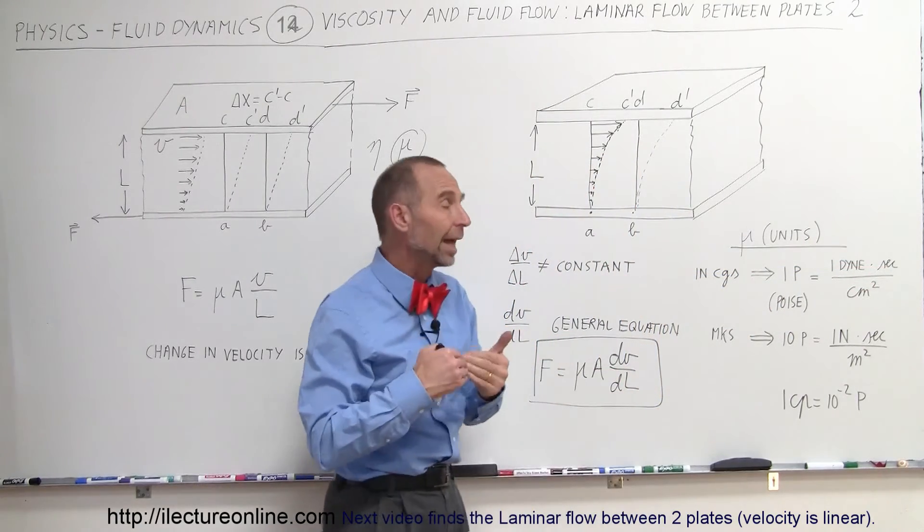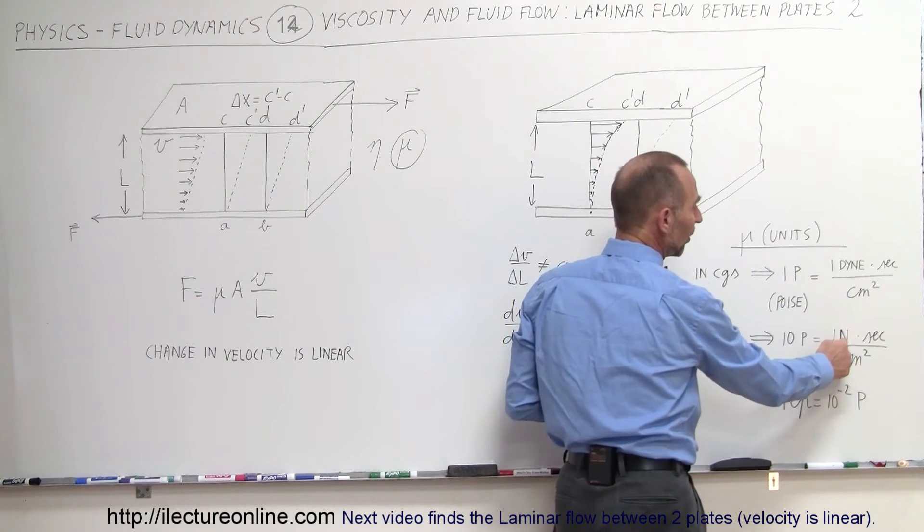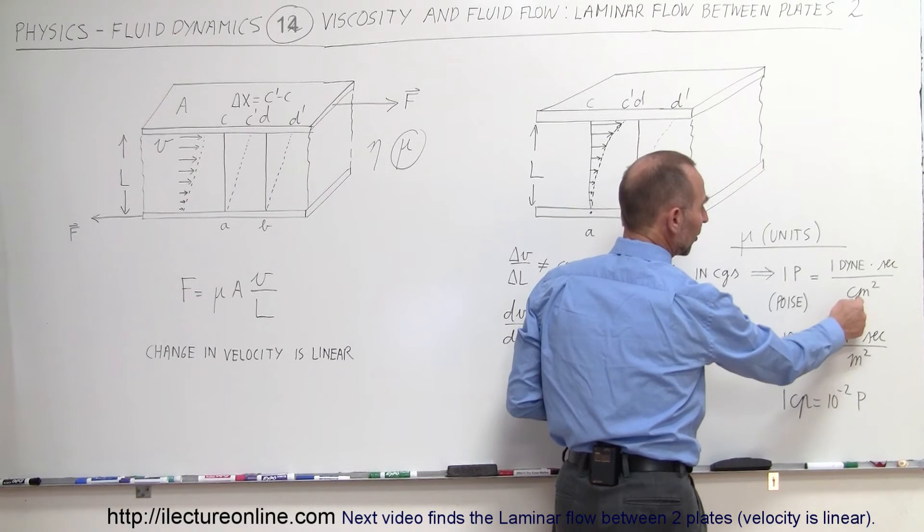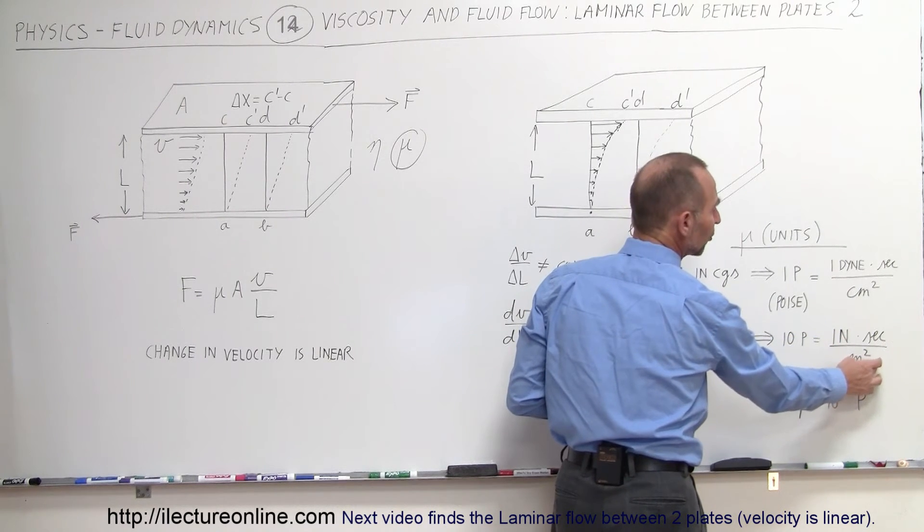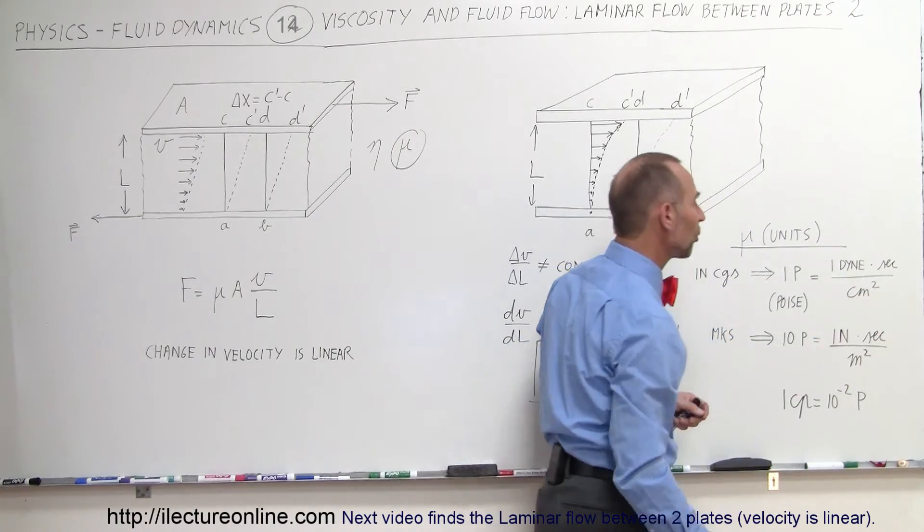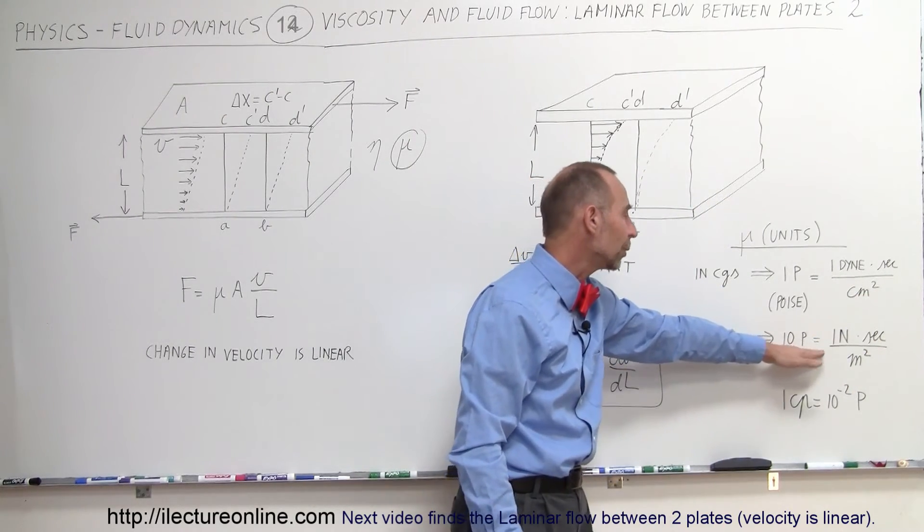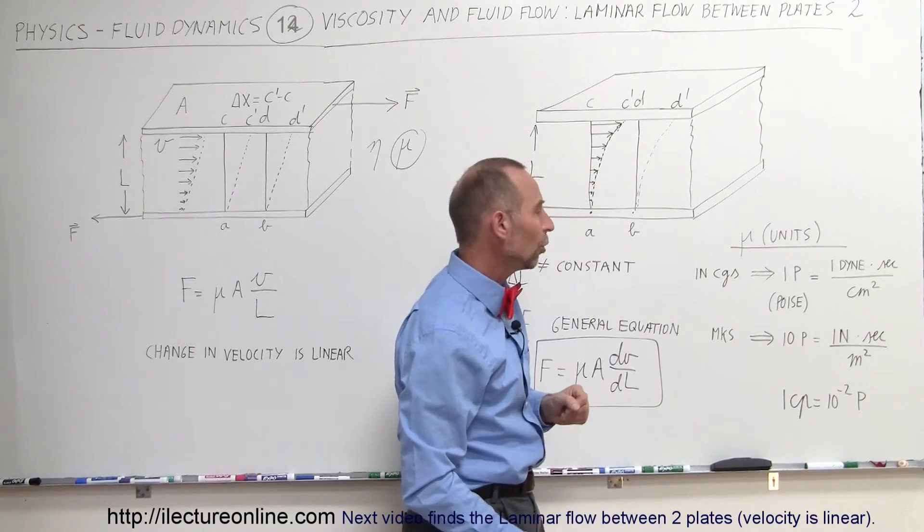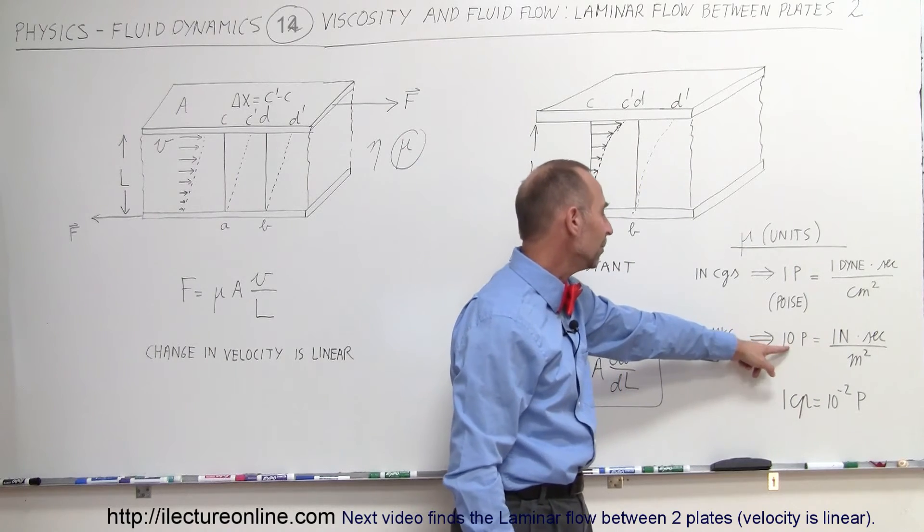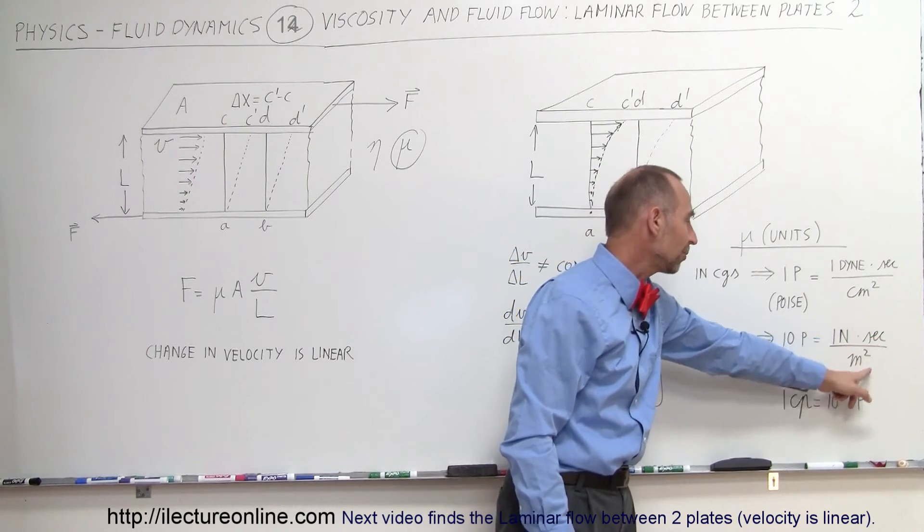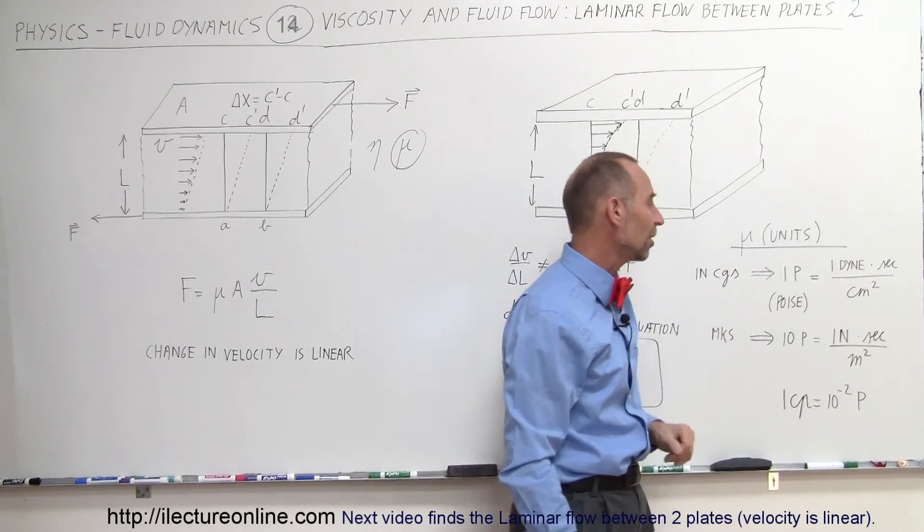If you want to convert that into MKS units, a dyne is 10 to the minus fifth newtons, seconds of course are the same and a centimeter is one one-hundredth of a meter so we have meters squared which is 10 to the fourth compared to centimeters squared. When you work it all out, you find that 10 poise equals 1 newton times seconds per meter squared.